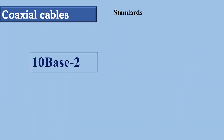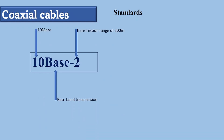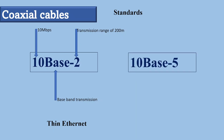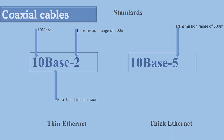Each cable defined by an RG rating is adapted for a specialized function. For example, cable TV and cable internet use RG59 coaxial cable. The 10Base-2, or thin ethernet, uses RG58 coaxial cable to transmit data at 10 Mbps with a range of up to 200 meters. And 10Base-5, or thick ethernet, uses RG11 to transmit at 10 Mbps with a range of 500 meters.